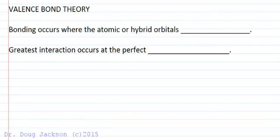Let's talk about valence bond theory. Valence bond theory is a theory of how bonds occur between atoms in a molecule. It's a little older than another theory we're going to talk about, molecular orbital theory, but it can give some great predictions about molecular structure and chemical properties.